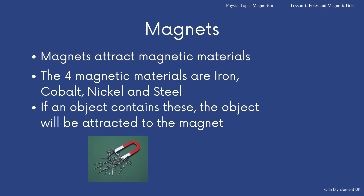Now, if an object contains these or is made purely of these, then that object is made of a magnetic material and it will be attracted to the magnet. So in that diagram there, you've got a horseshoe magnet, and that horseshoe magnet has attracted the iron nails to it. That just proves that those iron nails are iron, or at the very least are made of magnetic materials. There are lots of different ways you can use magnets, because you can also prove that certain materials don't contain a magnetic material.